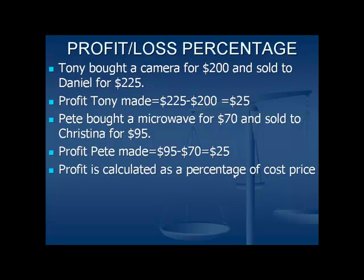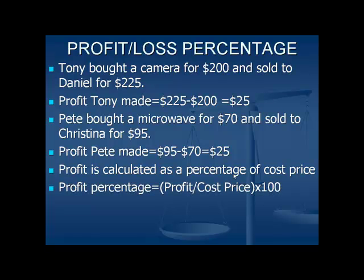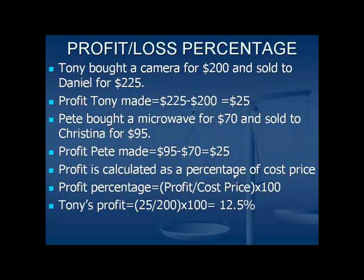But profit is always calculated as a percentage of the cost price and not in absolute terms. So profit percent is equal to profit divided by the cost price, multiplied by 100. So Tony made a profit of $25, which is the profit divided by the cost price $200, multiplied by 100. That is equal to 12.5%.